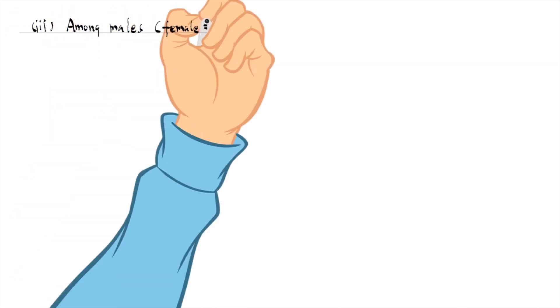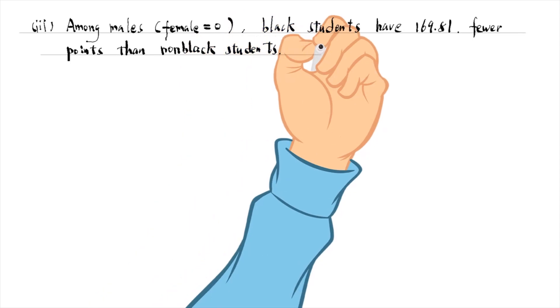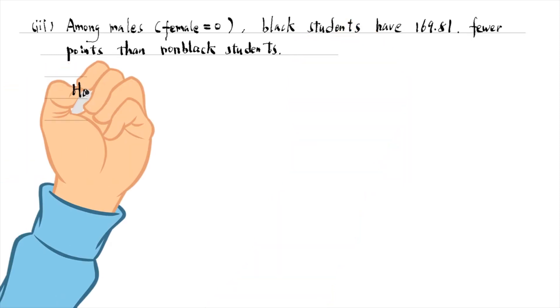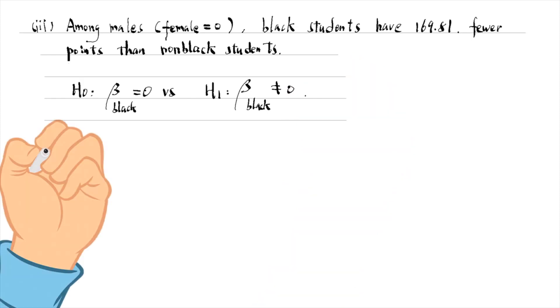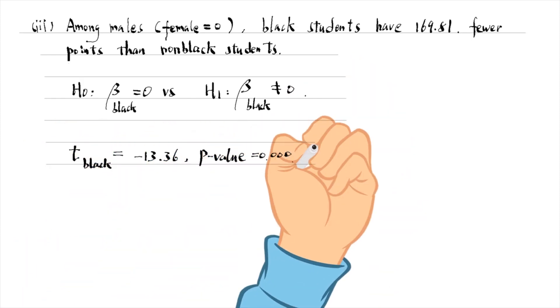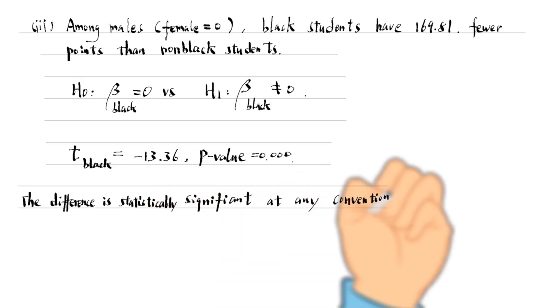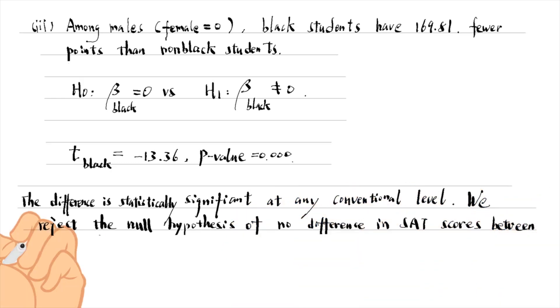For part three, the female dummy equals zero for the male students. Among males, black students have 169.81 fewer points than non-black students on average, holding school size fixed. The null hypothesis that there's no difference between their scores is beta black equals zero. The alternative that there's a difference is beta black does not equal zero. The t-statistic is minus 13.36, and its p-value is zero to three decimal places. The difference is statistically significant at any conventional level. We reject the null hypothesis of no difference in the SAT scores between non-black males and black males.